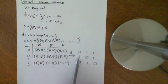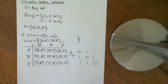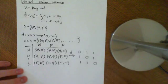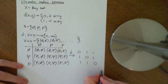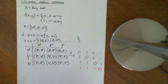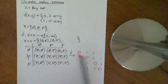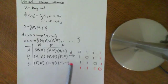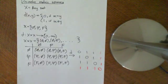The distance function ascribes to each element the corresponding number in this table. If you had a bigger set, you can imagine the pattern continues — the diagonal elements are going to be zero, and the off-diagonal elements are all going to be ones. You don't need a finite set; it can be countably infinite or uncountably infinite, it's still perfectly well defined.